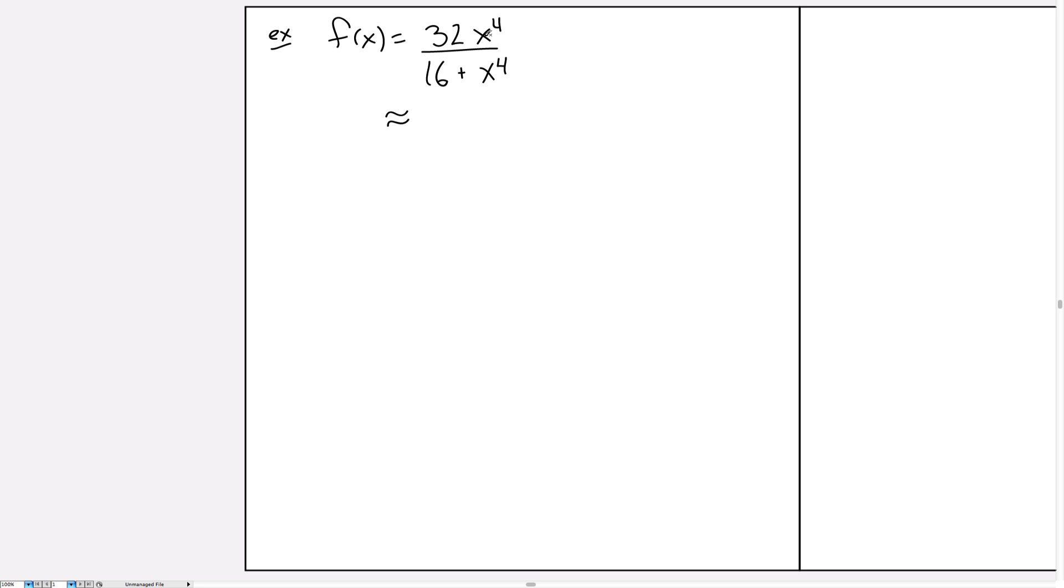In the numerator, if x is large, there's not really much we can say because we're not adding two quantities, one of which is large compared to the other. So we're actually just stuck with what we've got in the numerator, unable to make any simplifications. However, in the denominator, if x is very large, then x^4 will be extremely large.